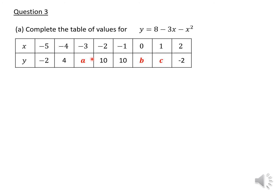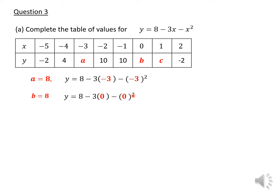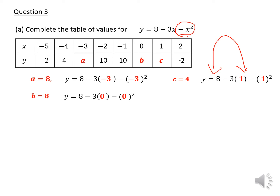Question three asks you to complete a table of values with missing values a, b, and c. When x is negative three, you substitute into the function to get a. When x is zero, you substitute to get b. When x is one, you substitute and find c equals four. I expect this to be a downward-opening parabola because of the negative x squared term, and I also expect the graph to cut the y-axis at eight.